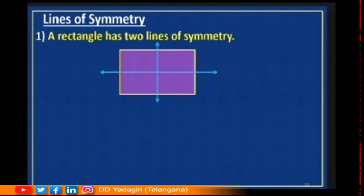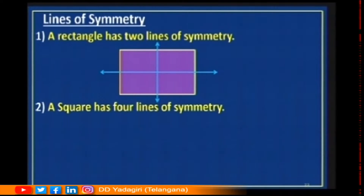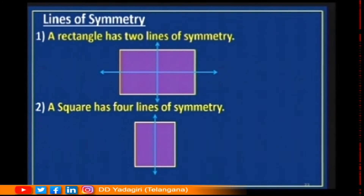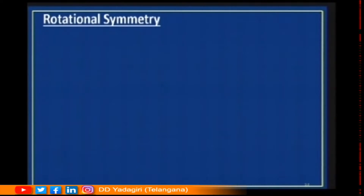A rectangle has two lines of symmetry. I am taking a rectangle and I am able to draw two lines of symmetry. A square has four lines of symmetry — drawn vertically, horizontally, and along both diagonals. So a square has four lines of symmetry.